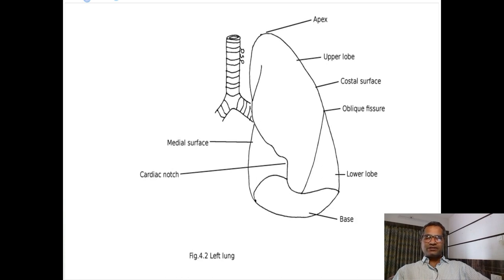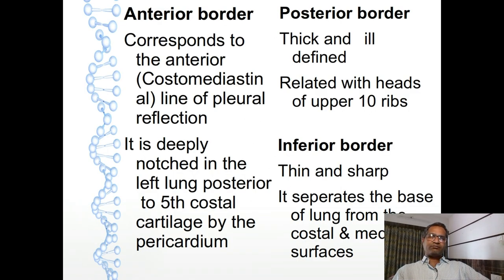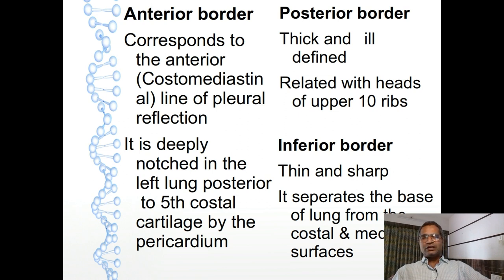Now borders - because medial surface shows different features, I will cover that surface later. First, anterior border: it is a sharp border and it lies in relation with the posterior aspect of sternum. It corresponds to the anterior line of pleural reflection, the costo-mediastinal reflection of pleura. It shows a deep notch in relation with left lung, posterior to the fifth costal cartilage, mainly formed by pericardium containing heart.